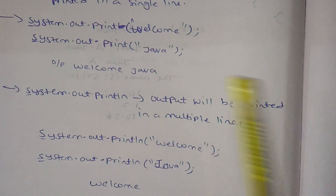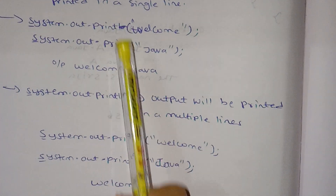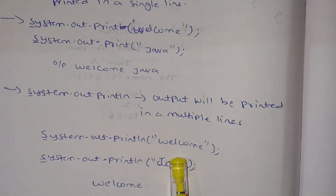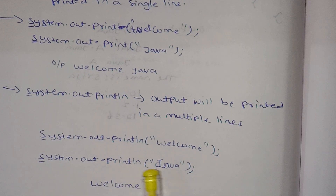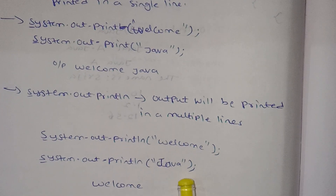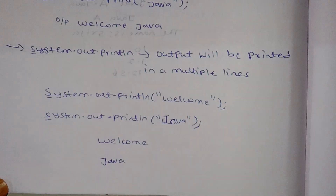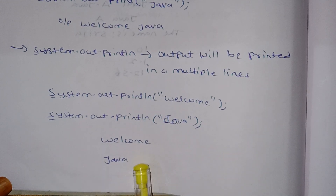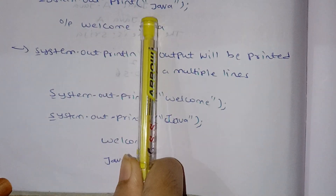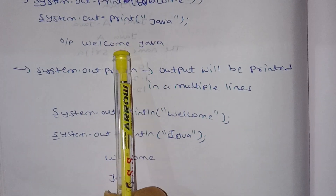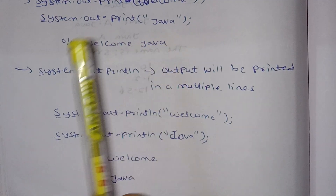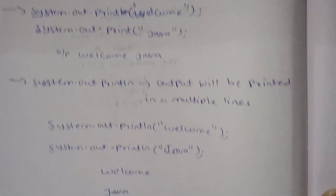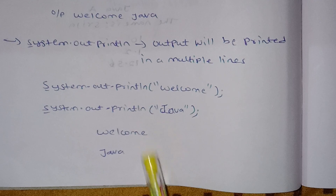With system.out.print, everything is printed in a single line. With system.out.println("welcome") and system.out.println("java"), the output is printed on two separate lines. So print keeps everything on one line, while println uses different lines.